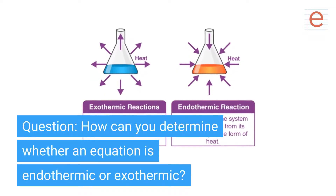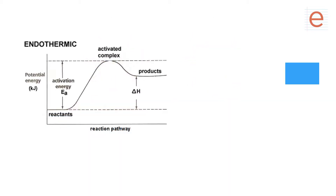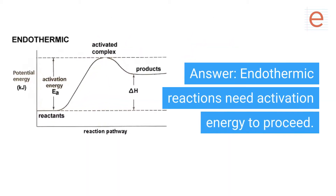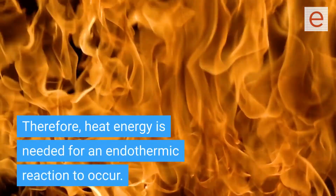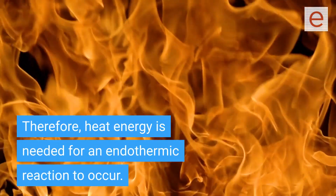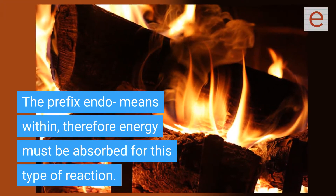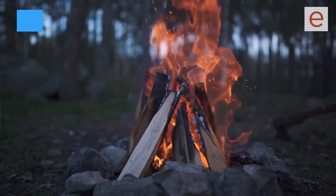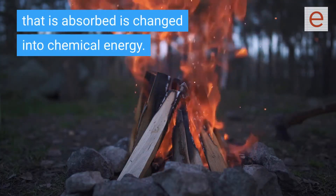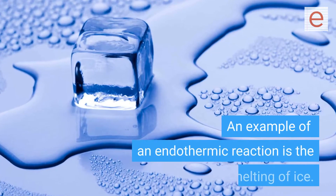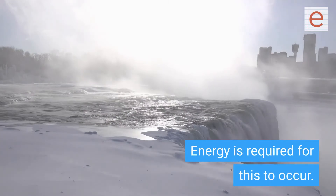How can you determine whether an equation is endothermic or exothermic? Endothermic reactions need activation energy to proceed, therefore heat energy is needed for an endothermic reaction to occur. The prefix 'endo' means within, therefore energy must be absorbed. Usually, heat energy that is absorbed is changed into chemical energy. An example of an endothermic reaction is the melting of ice — energy is required for this to occur.